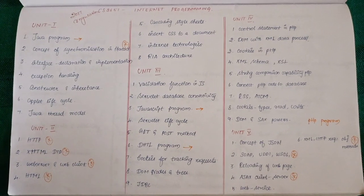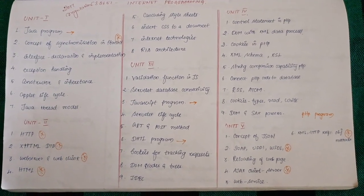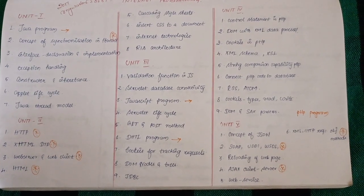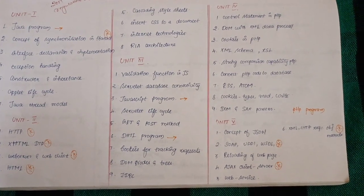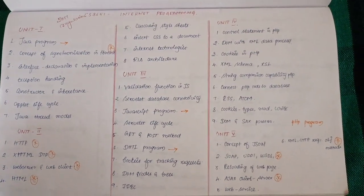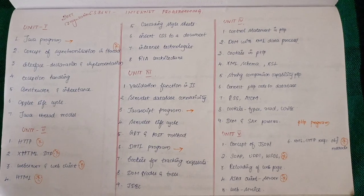The orange color indicates topics that are repeatedly asked. Arrow put up means they will be giving a problem, and you have to write a program. These are the important questions for the subject Internet Programming.